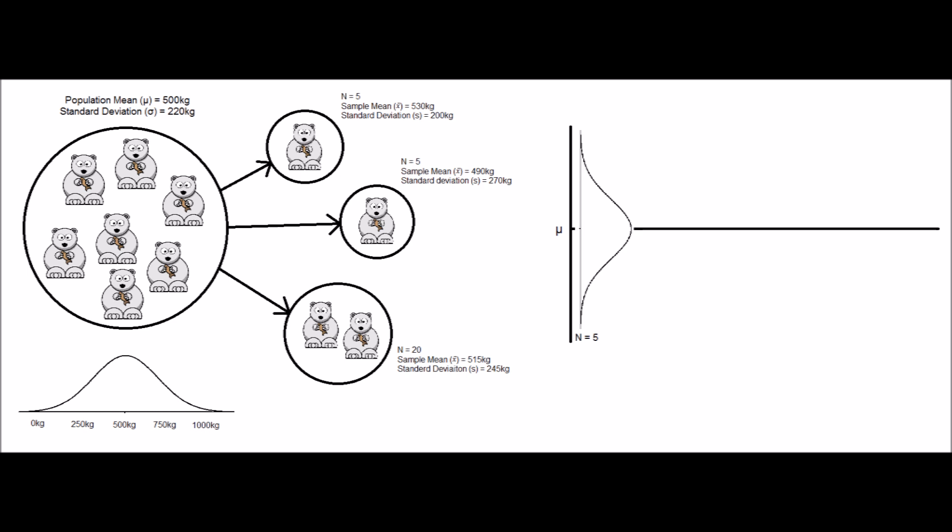It would look something like this. The average of all the sample means would be equal to the population mean, but much like how not all individual bears weigh the same, not every sample will have the same mean, so we see variability around the mean. Here you can see I have plotted the means for our two samples of size 5.